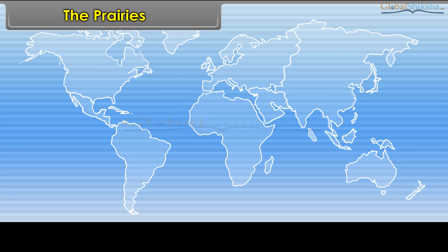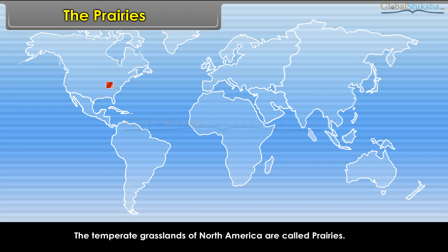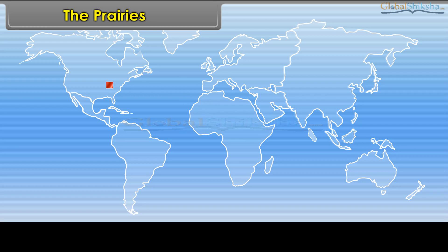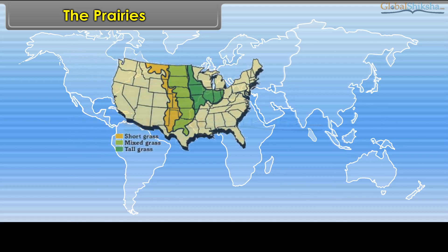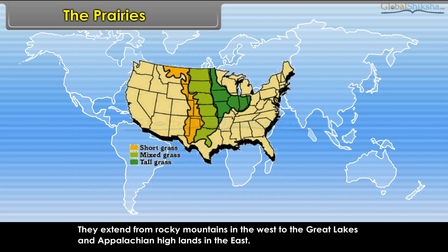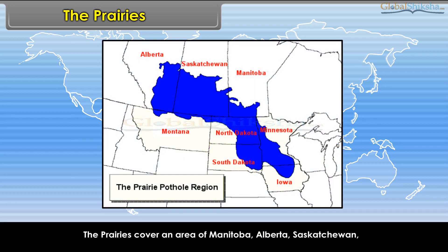The Temperate Grasslands of North America are called Prairies. For the most part, Prairies are treeless, but near the low-lying plains flanking river valleys, woodlands can be found. They extend from the Rocky Mountains in the west to the Great Lakes and Appalachian Highlands in the east.